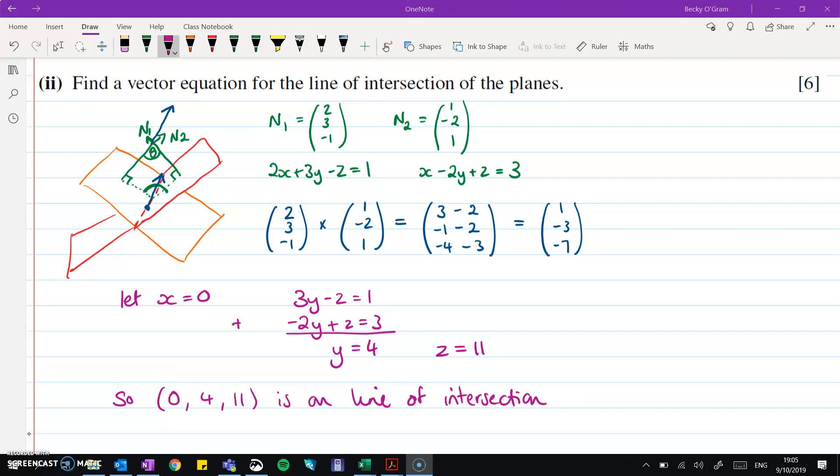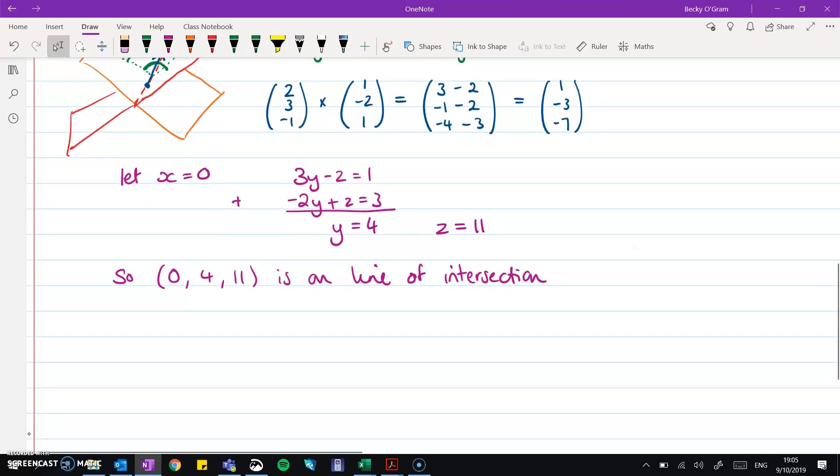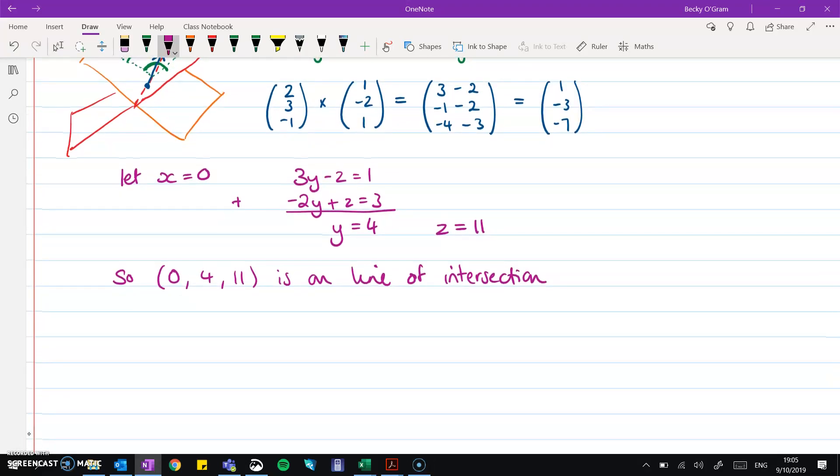So now we have a point that's on both the planes, therefore it's on the line of intersection. And we have a direction that that line goes in. So we put those together as a vector equation. Give it the starting point, so (0, 4, 11). So that's the position vector for a point we know is on the line. And then we'll go in lambda multiples of the direction, which is (1, minus 3, minus 7).